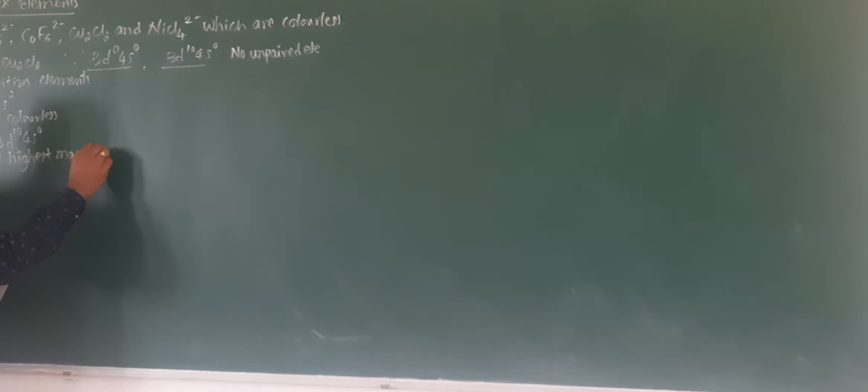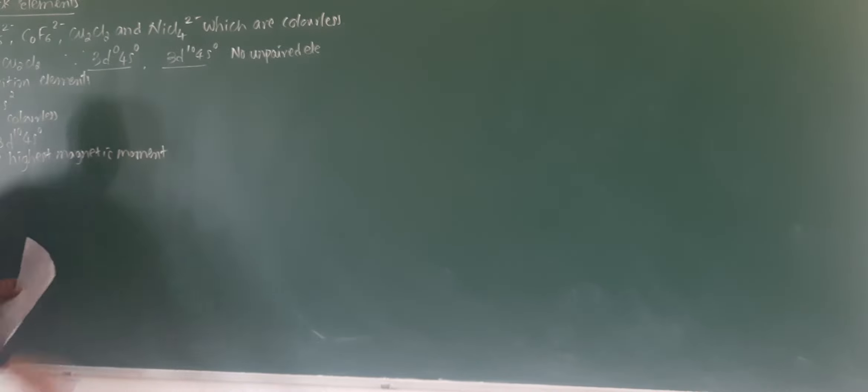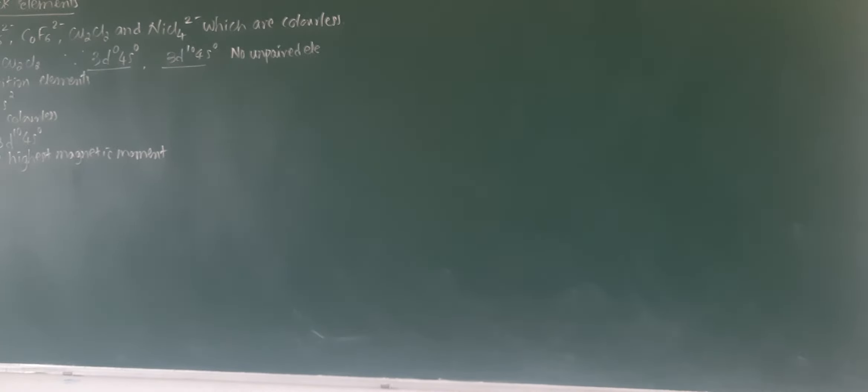The next question, level 2: which transition metal ion has the highest magnetic moment? You should remember the equation used to calculate the magnetic moment. The equation is: μ = √(n(n+2)), where n is the number of unpaired electrons.